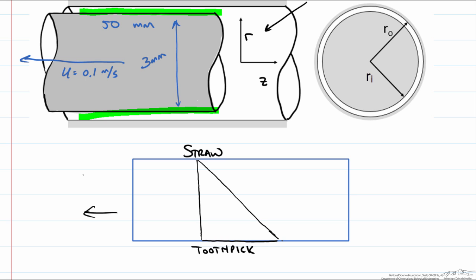So if we are pulling the toothpick out this way this would not be correct. It should be the other way and we can draw our velocity arrows moving to the left such that our maximum velocity is at the toothpick surface and our velocity at the straw is 0. Now we know this maximum velocity is 0.1 m per second.